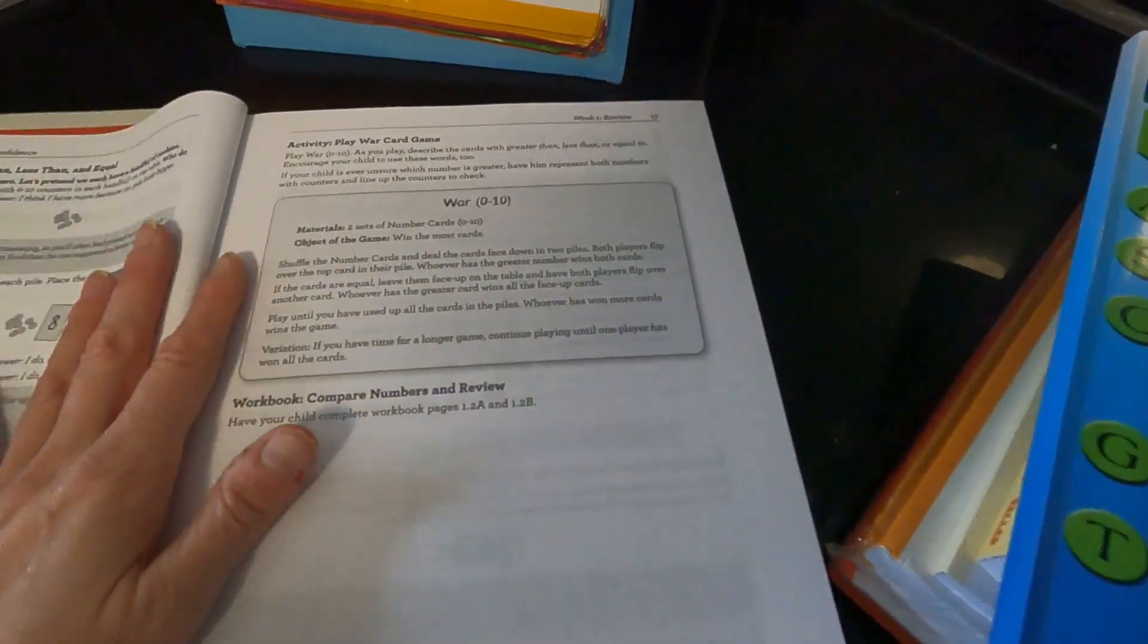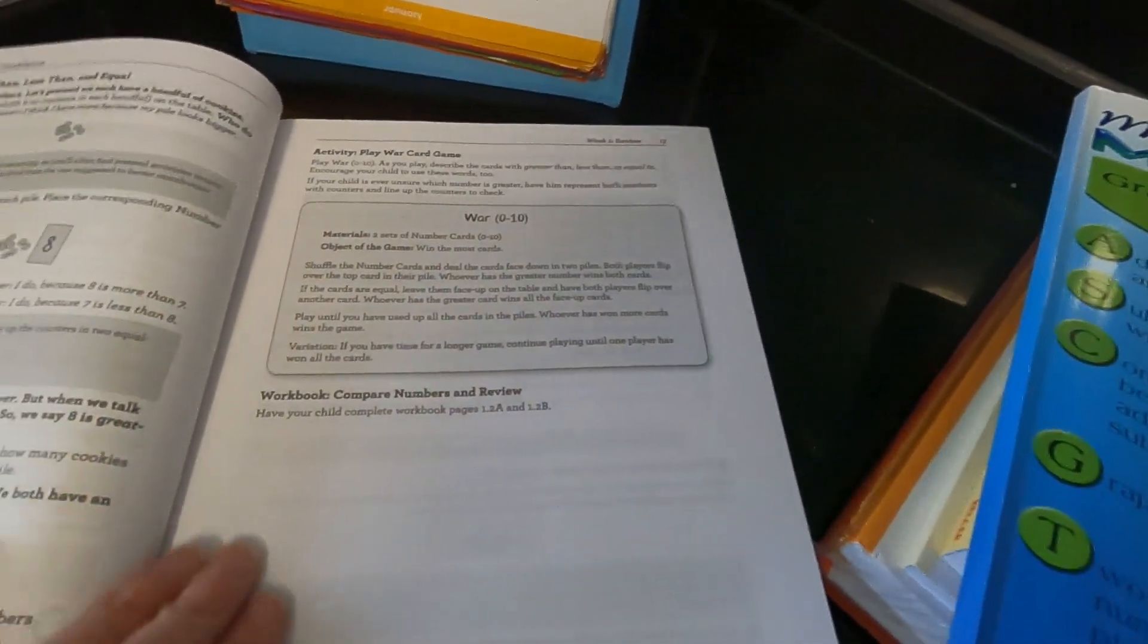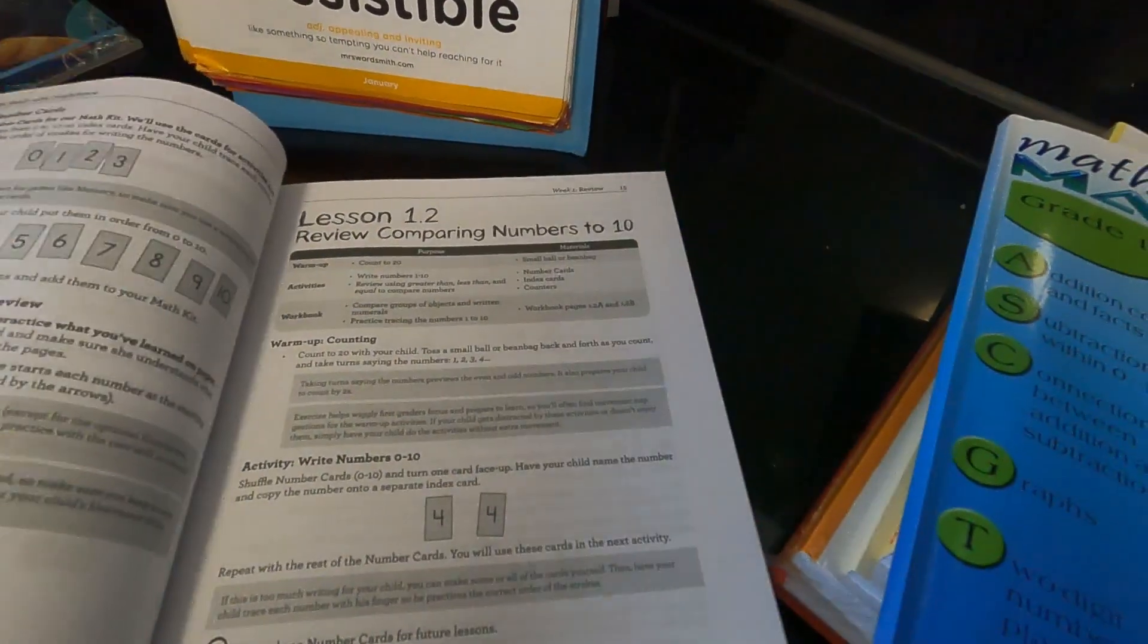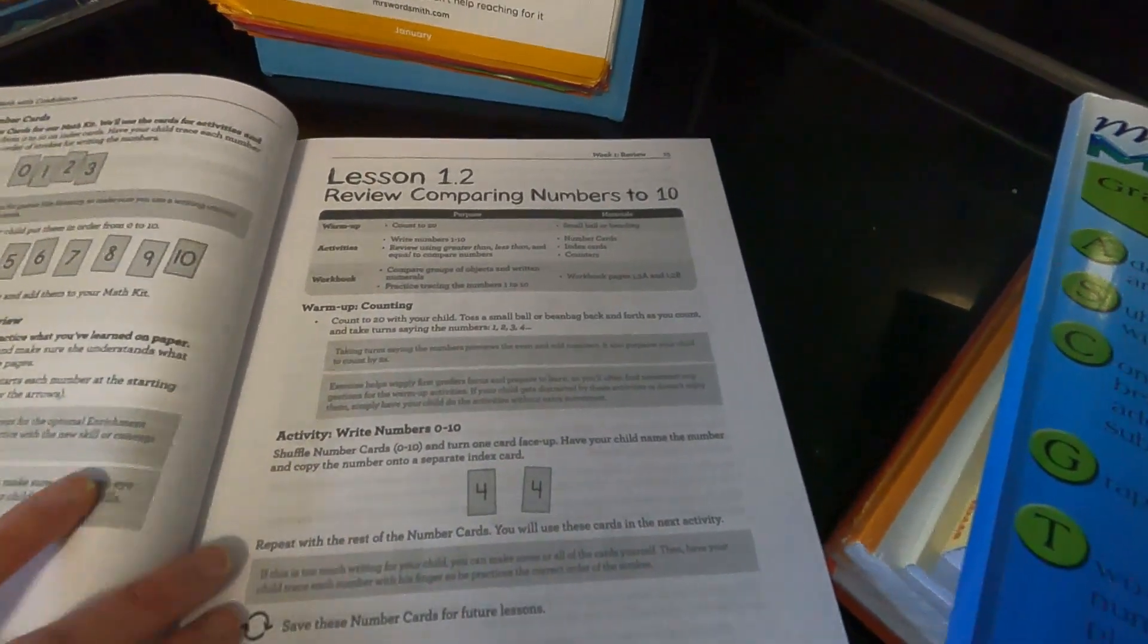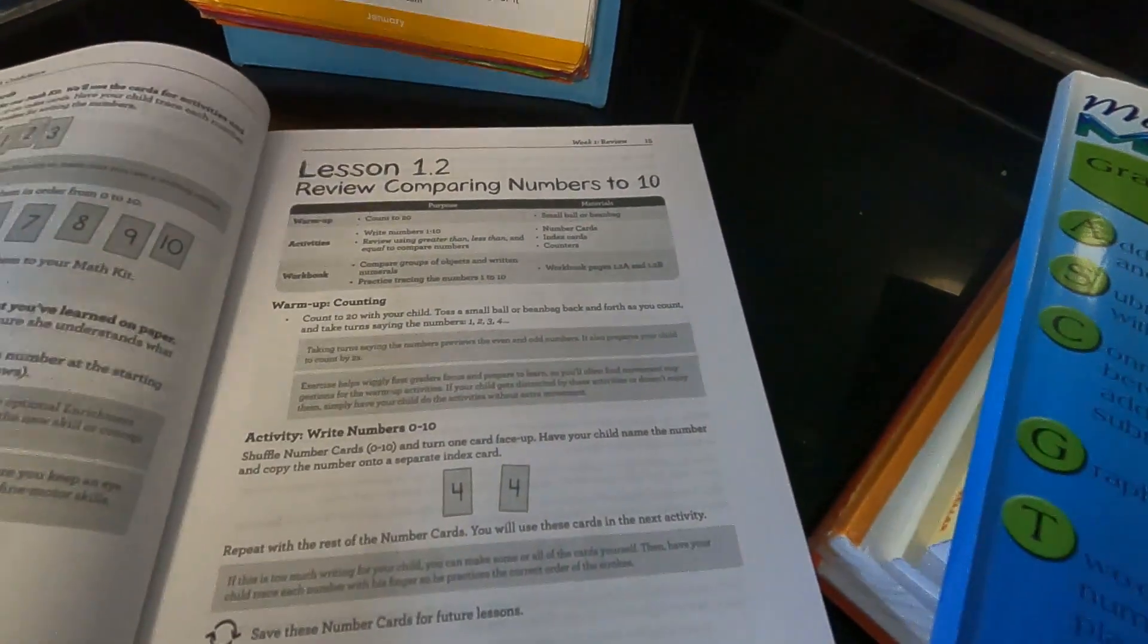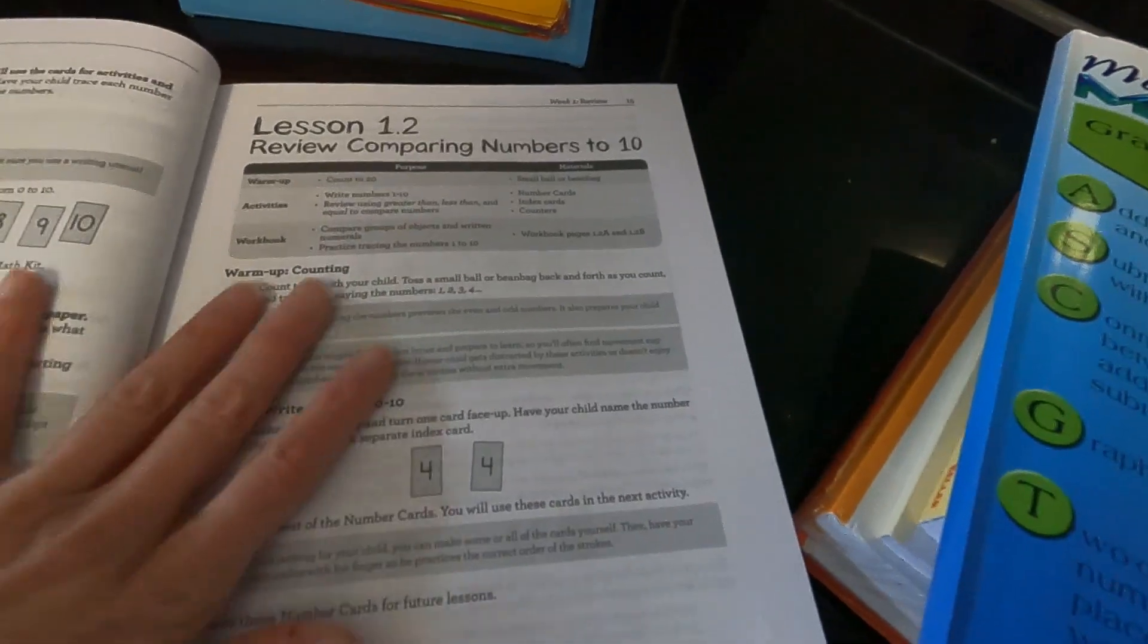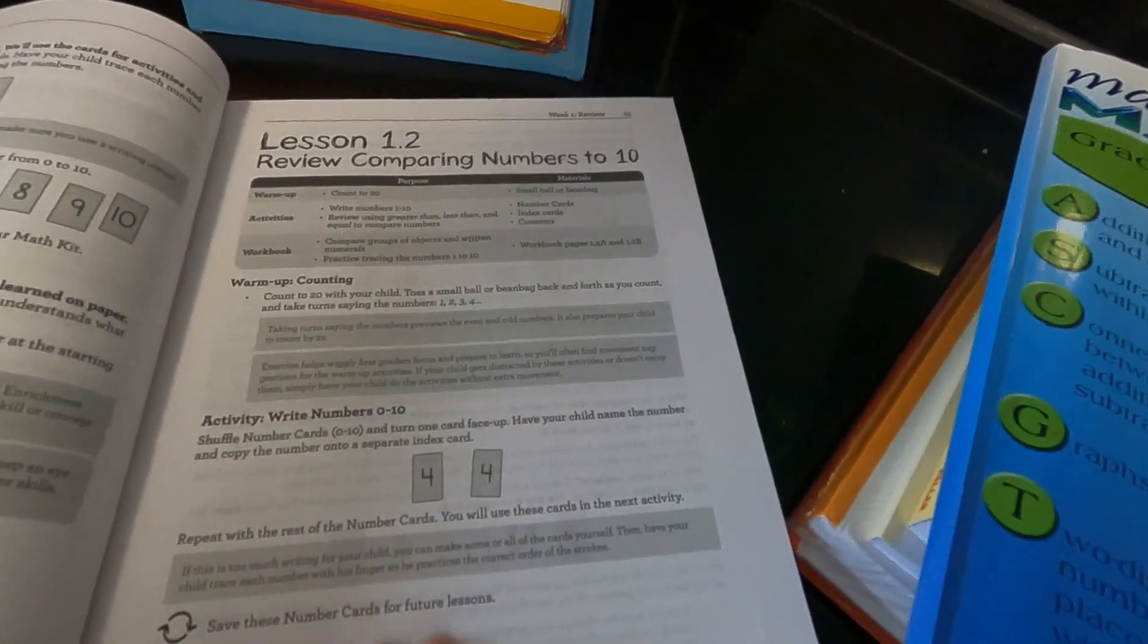An instructor manual—let's pick out a week. So like here, you're going to play War: zero through ten. Not only that, but it really—you don't need to buy a big expensive package of things. I'm telling you, this is such a thorough curriculum.